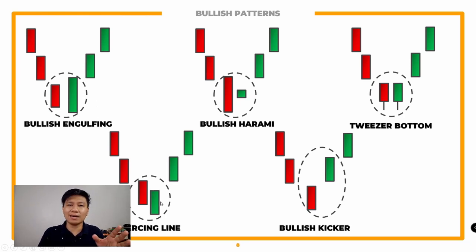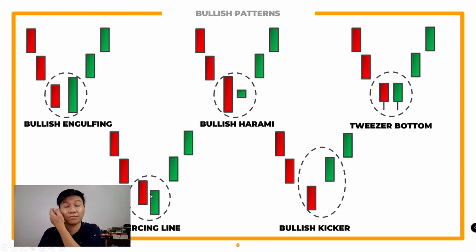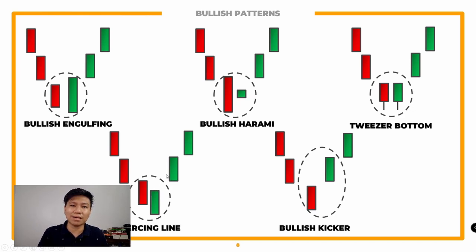Sa piercing line, ang rule naman dito is at least 50% above yung candlestick the following day. So kapag may nasa downtrend ka, yung previous day nag-close ka ng red, then yung following day meron kang green candlestick na at least 50% above — para masabi siyang piercing line. Hindi siya ganong kalakas na reversal — usually short-term trend lang na magre-reversal. You still need to validate rin yung trends mo.